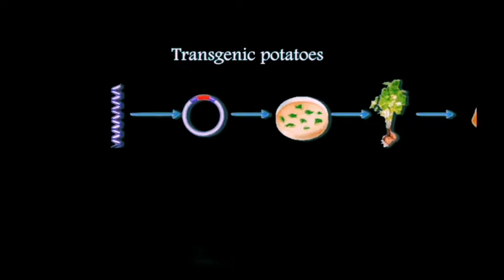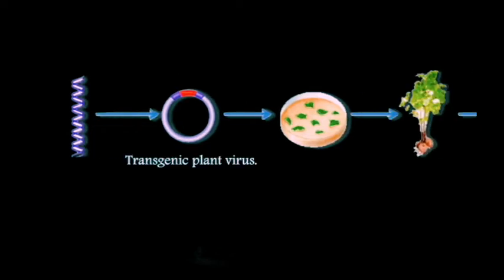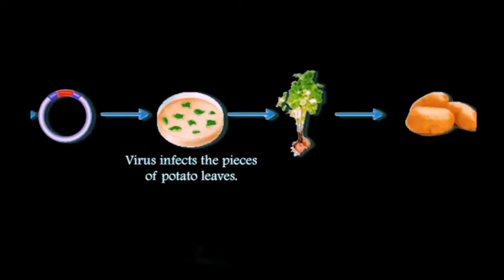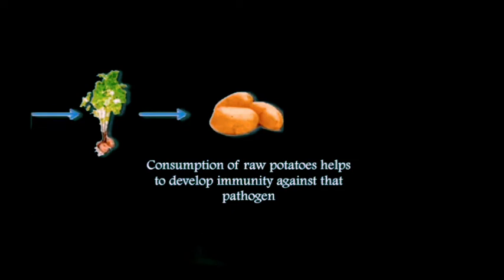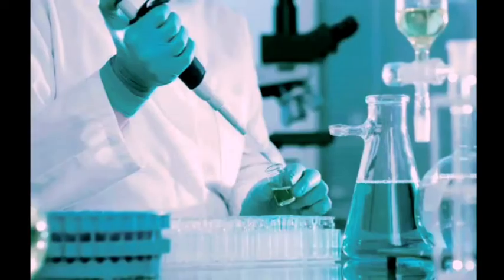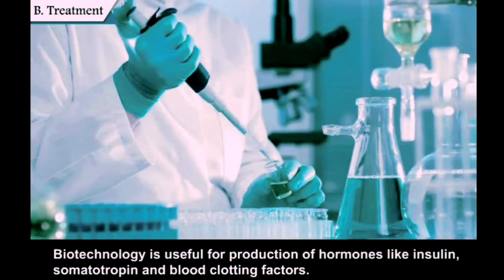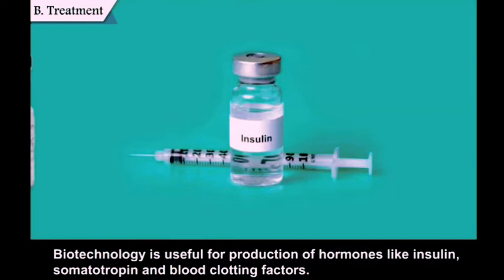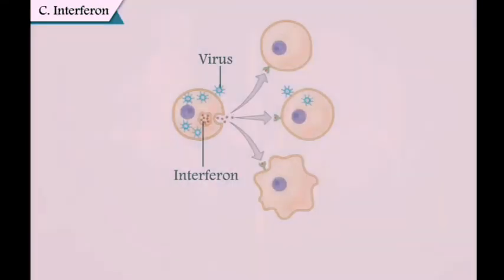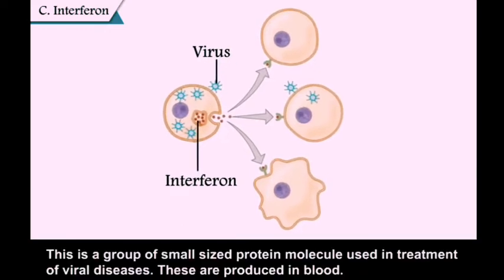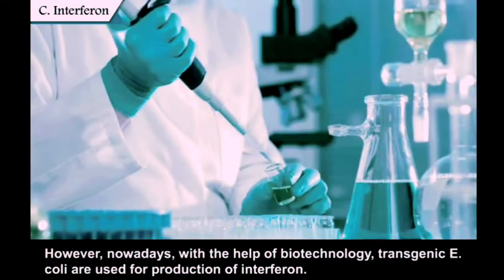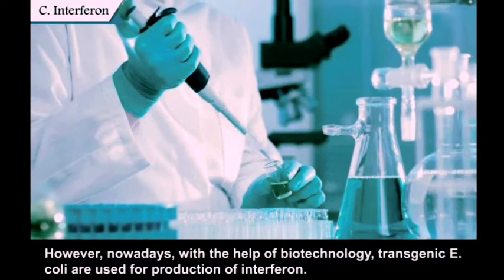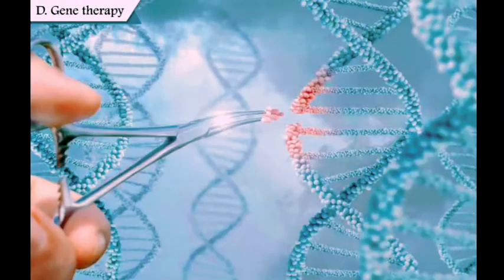Transgenic potatoes: the desired gene is isolated from the human pathogen, a transgenic plant virus is used to infect leaf pieces, and the entire plant is developed from the leaf piece containing the gene of the human pathogen. Consumption of the raw potato helps develop immunity against that pathogen. Treatment: biotechnology is useful for production of hormones like insulin, somatotropin, and blood clotting factors. Interferon is a group of small protein molecules used in treatment of viral diseases; nowadays, transgenic E. coli are used for its production.